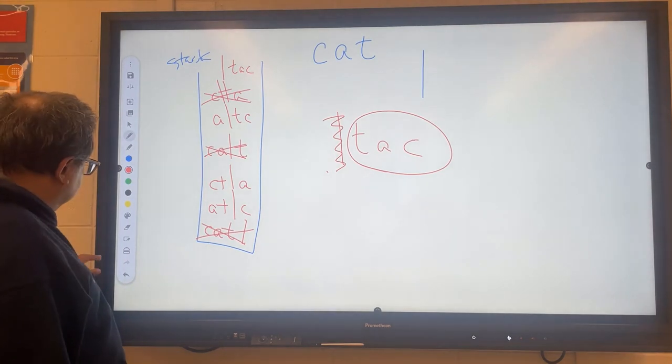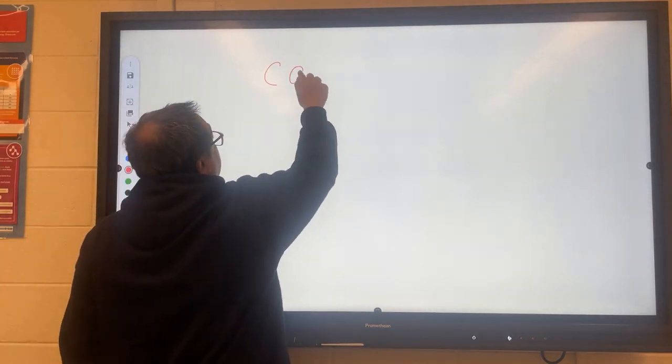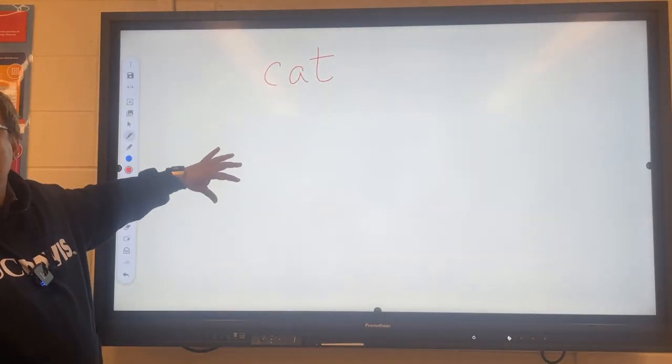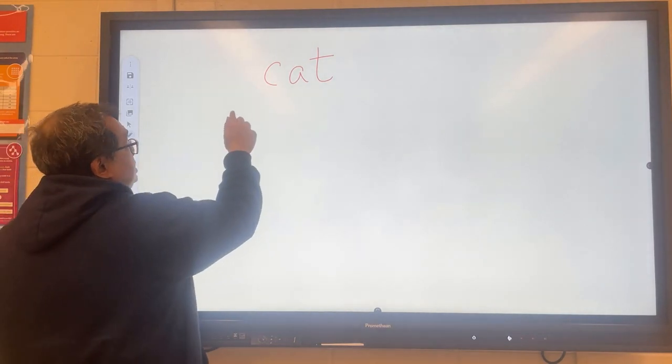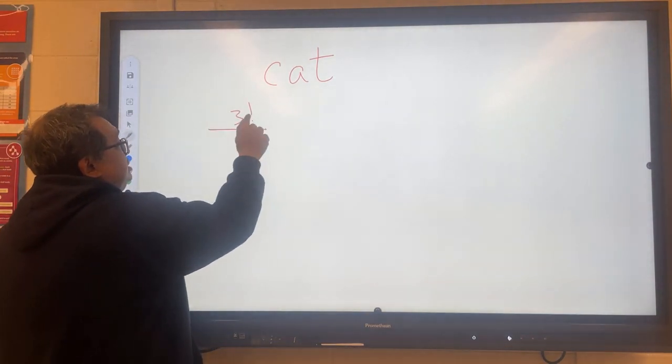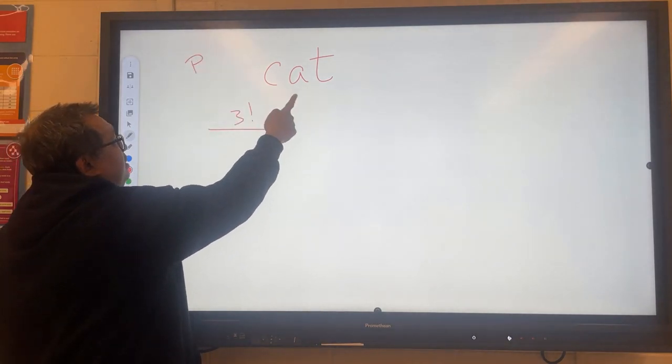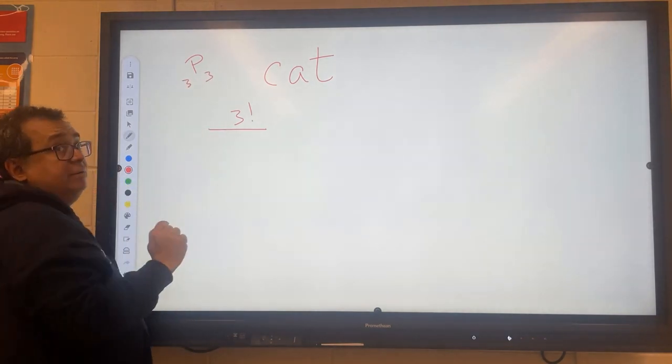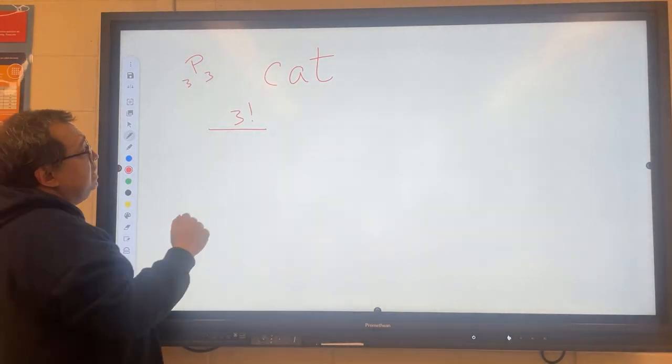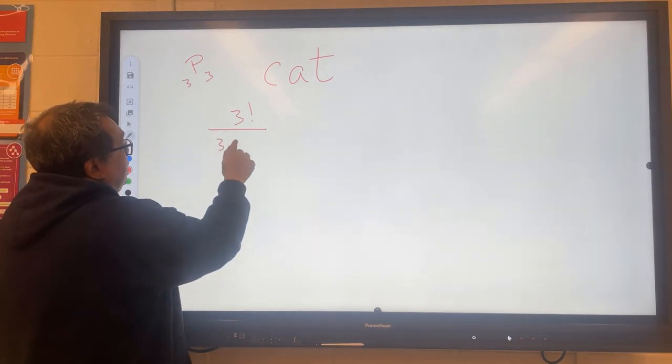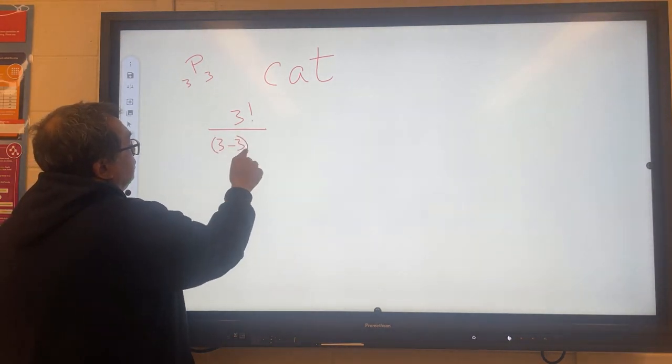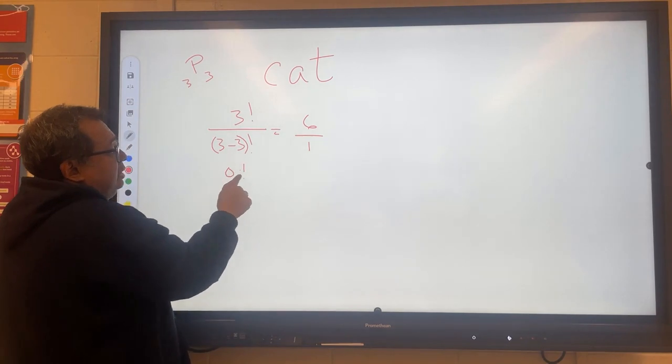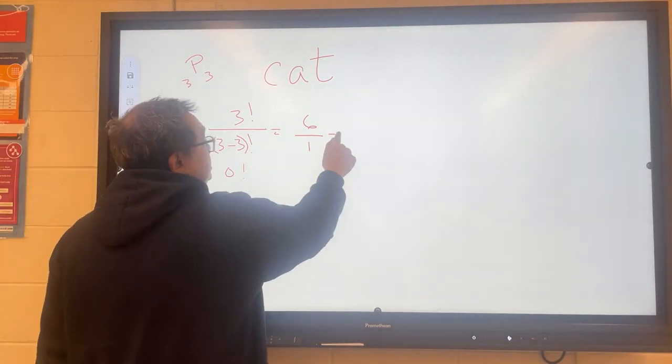Let's go back to our little example here of cat. And let's remember that we have six solutions here. And the way we got to six was we said it's going to be 3 factorial. This is permutations now. And it's going to be 3 factorial. So this is going to be 3 choose 3. So it's going to be 3 factorial over (3 minus 3) factorial. And so this is going to be 6 over 1. Remember, 0 factorial is 1. So we're going to have six solutions like that.